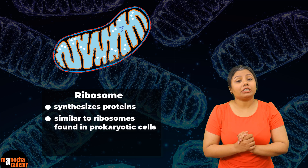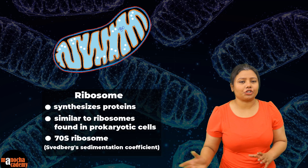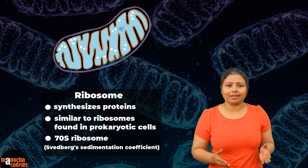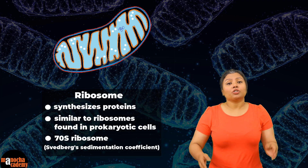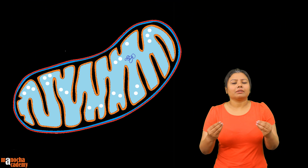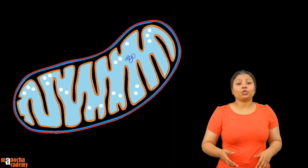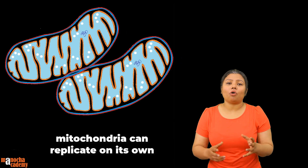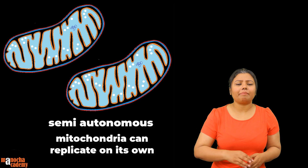What do I mean by that? It means that the ribosomes are 70S in nature, not 80S. For the concept of 70S and 80S ribosomes, you can refer to the topic cell fractionation. Inside the mitochondria, the DNA and the protein synthesizing machinery is already present. So if the mitochondria wants to replicate itself, it can replicate on its own, and hence mitochondria is also known as semi-autonomous.